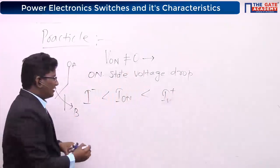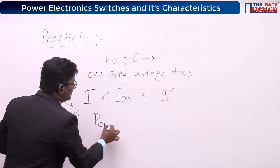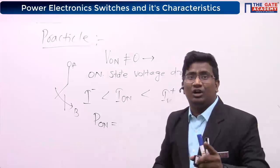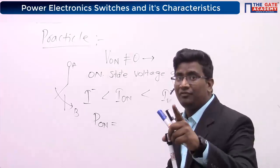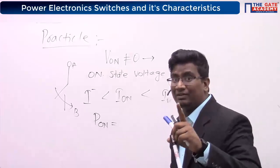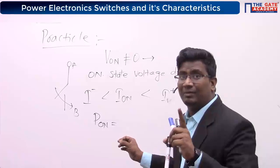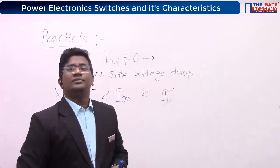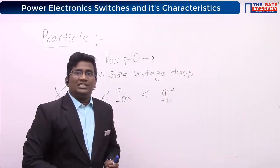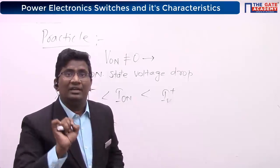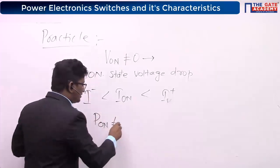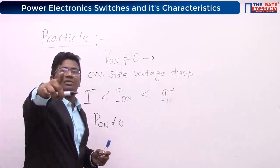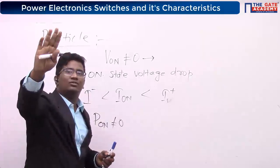During on-state, what should be the power loss? In the previous case of the ideal switch, power loss was zero. But in the practical case, is power loss zero or a finite value? It is a finite value — power loss is not equal to zero.